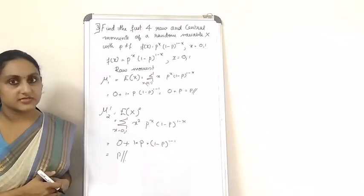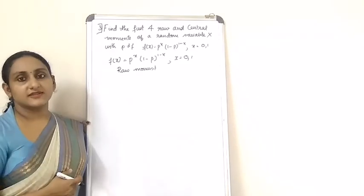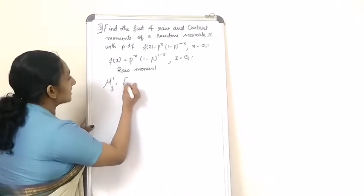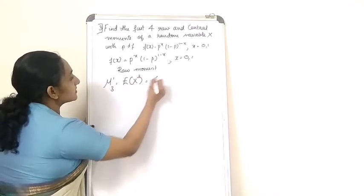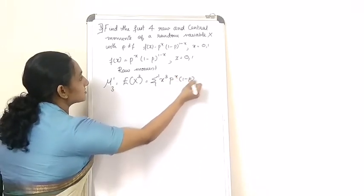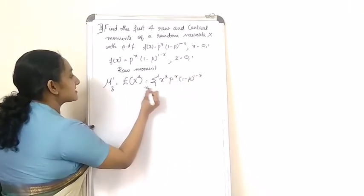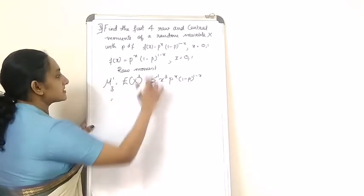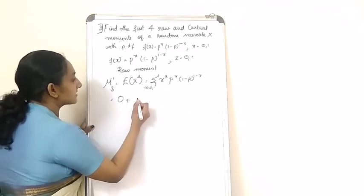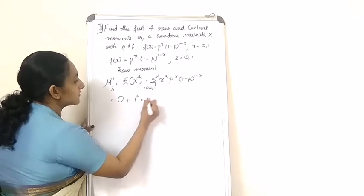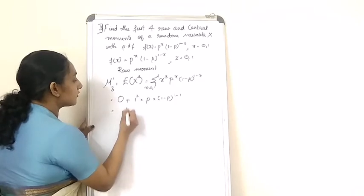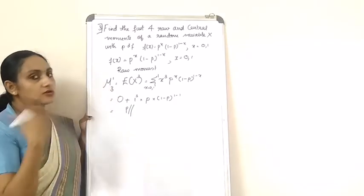Now let's look at the third raw moment. μ₃' is equal to the expectation of x³, which is the summation of x³ * p^x * (1-p)^(1-x), where x takes values 0 and 1. The first term is 0 since x=0. Putting x=1 gives 1³ * p * (1-p)^0 = p. So μ₃' is also equal to p.